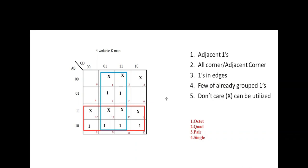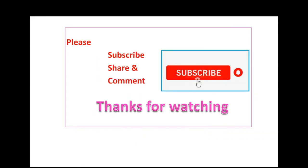Don't bother about don't cares that are left out. Our aim is to group only the ones in SOP. In the case of POS, our aim is to group zeros. Don't bother about unused don't cares. Thanks for watching.